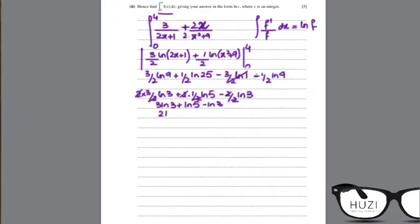So 3 ln 3 minus ln 3, we get 2 ln 3 plus ln 5. 2 ln 3 is ln 9 plus ln 5, we take ln common, 9 times 5 is 45, so our answer is ln 45.